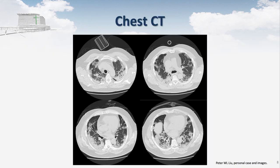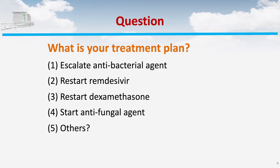We did a CT scan. You can see typical ground-glass opacity and consolidation over the bilateral lower peripheral areas. If this is your patient, what is your treatment plan? You can escalate the antibacterial agent — maybe bacterial co-infection. Or you can restart remdesivir, maybe COVID reactivation. Or restart dexamethasone — this patient only received a five-day course. Or you can start an antifungal agent. Please vote for this.